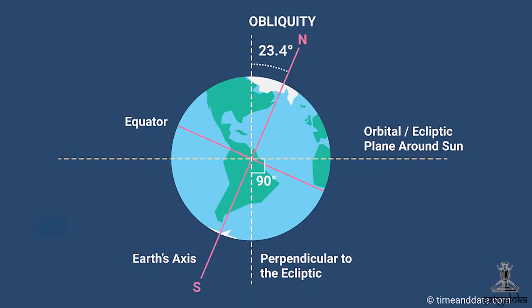Nothing in the universe is ever rock steady. Everything changes in time — everything has periodic and non-periodic variations, including the tilt of the Earth's axis. The rotational axis of the Earth is tilted by 23.5 degrees; it is the angle between the equator of the Earth and the ecliptic plane, which is the plane in which the Earth revolves around the Sun. The rotational momentum of the spinning Earth keeps its axis pointing in the same direction in space with the same tilt as it travels around the Sun.